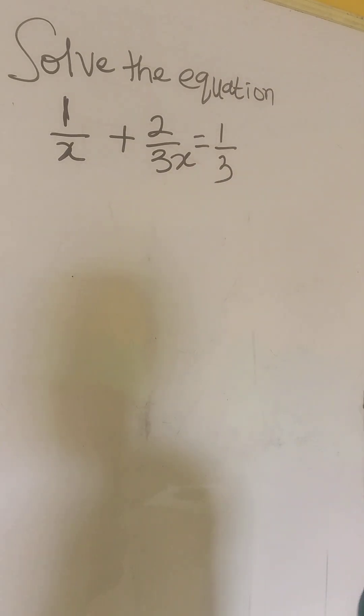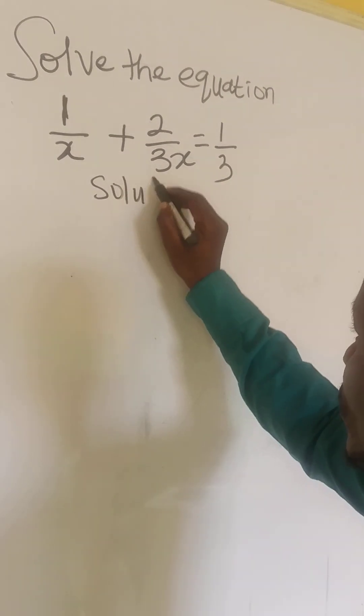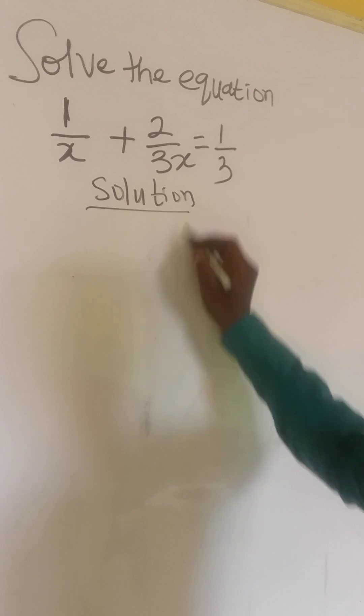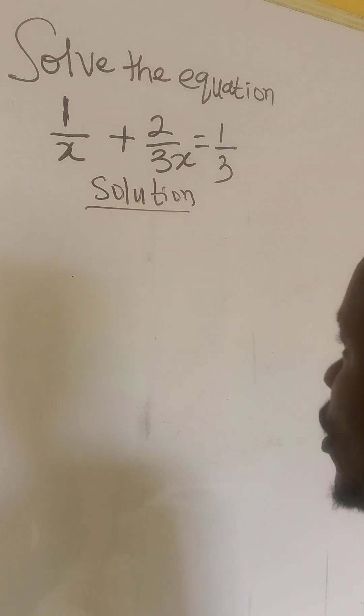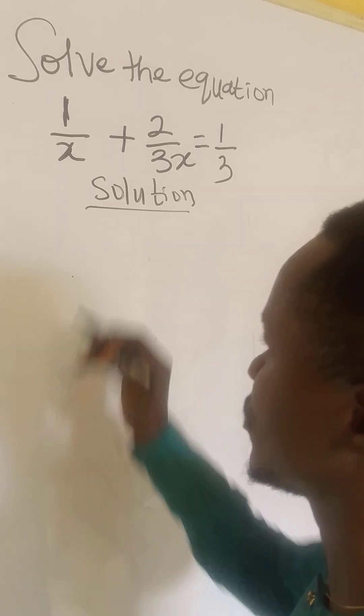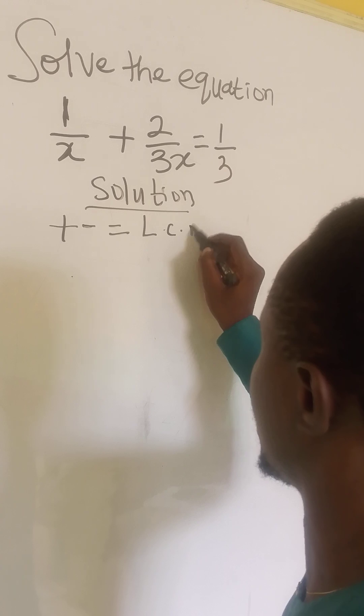How can we do this? As it is, there are some things that we have to understand on that fraction. When two or more fractions are separated by plus or minus, what we do is to find their LCM.